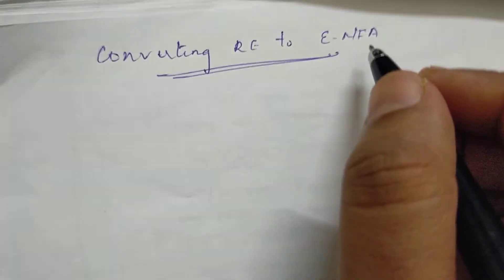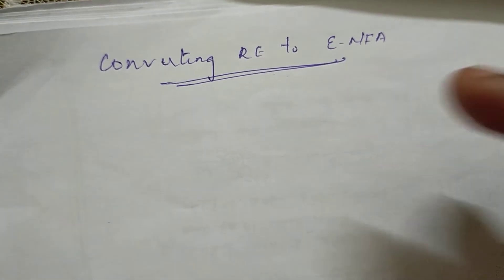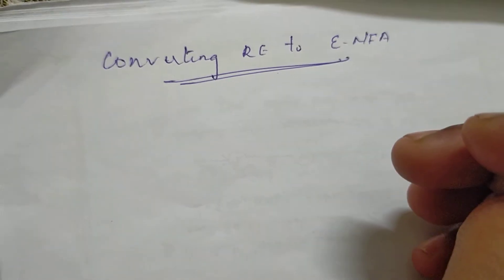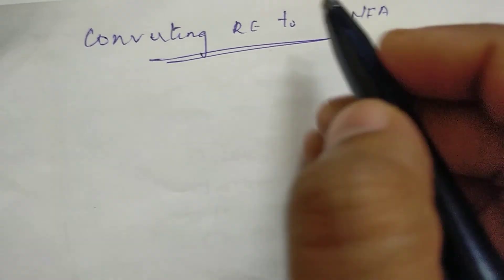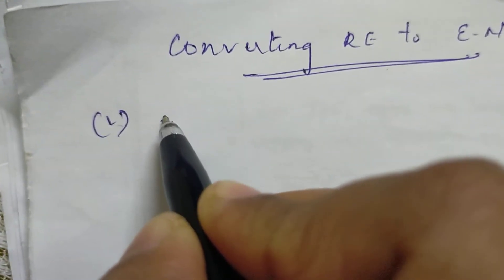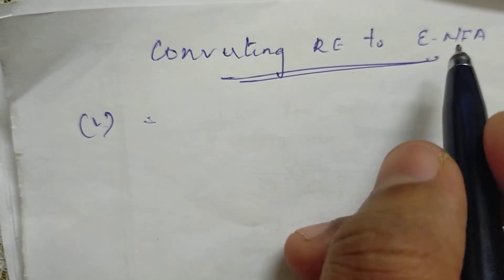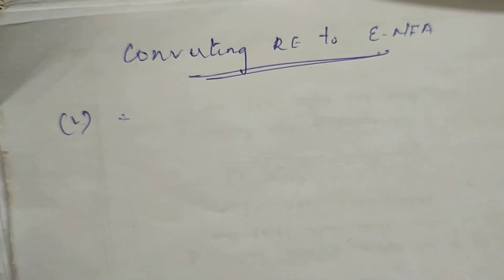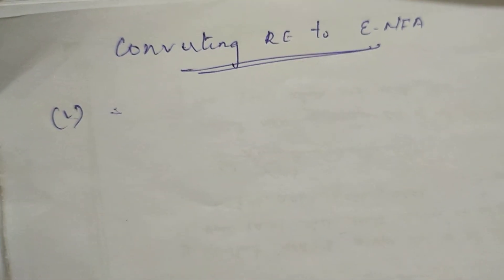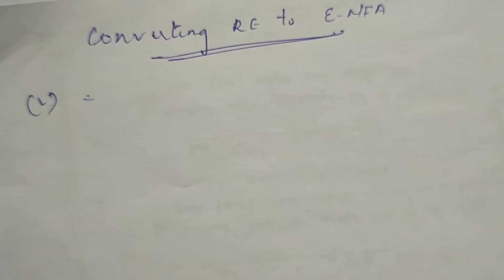This is converting regular expressions into Epsilon NFA. If you have a regular expression, you can construct it automatically — that is the Epsilon NFA. We have a little bit of automatic construction. We have R plus S, R dot S, and R star.